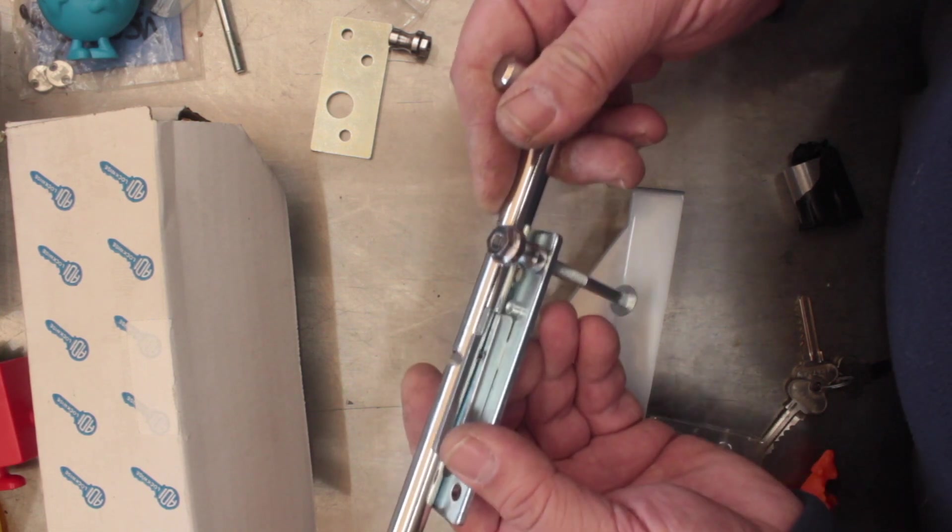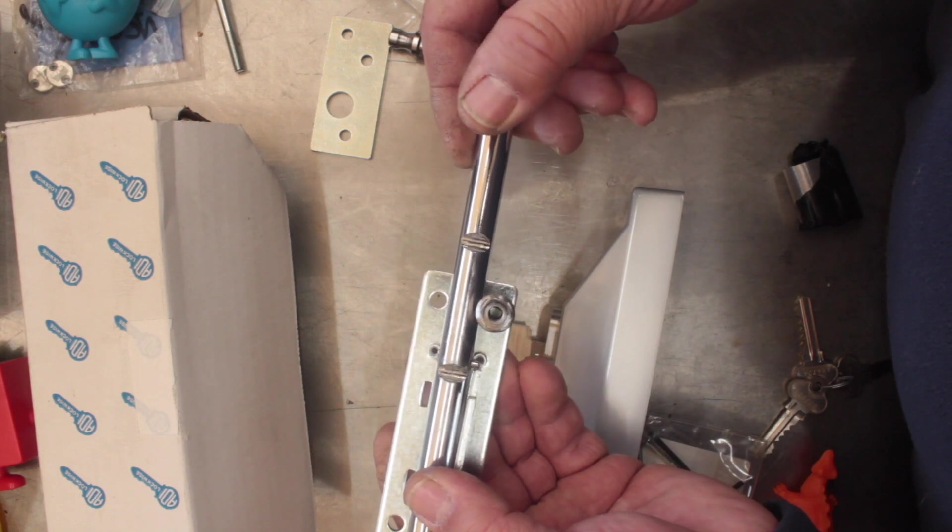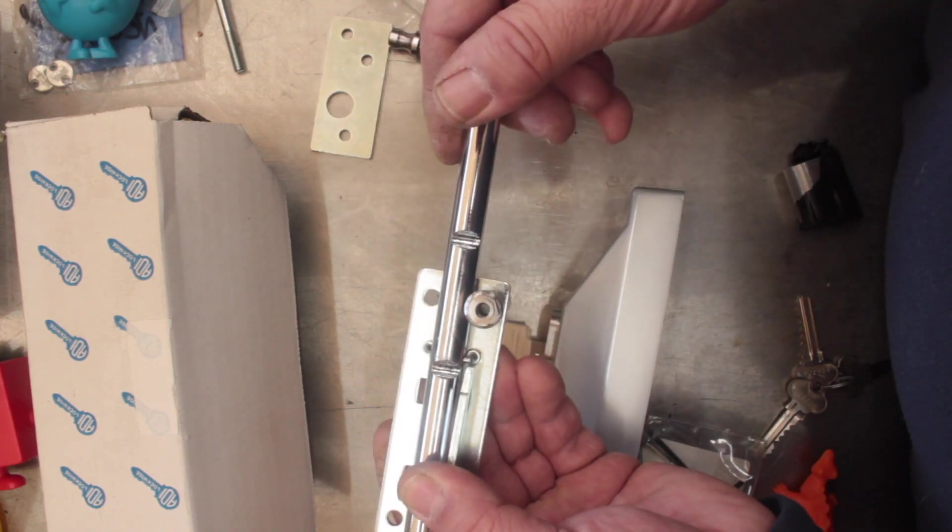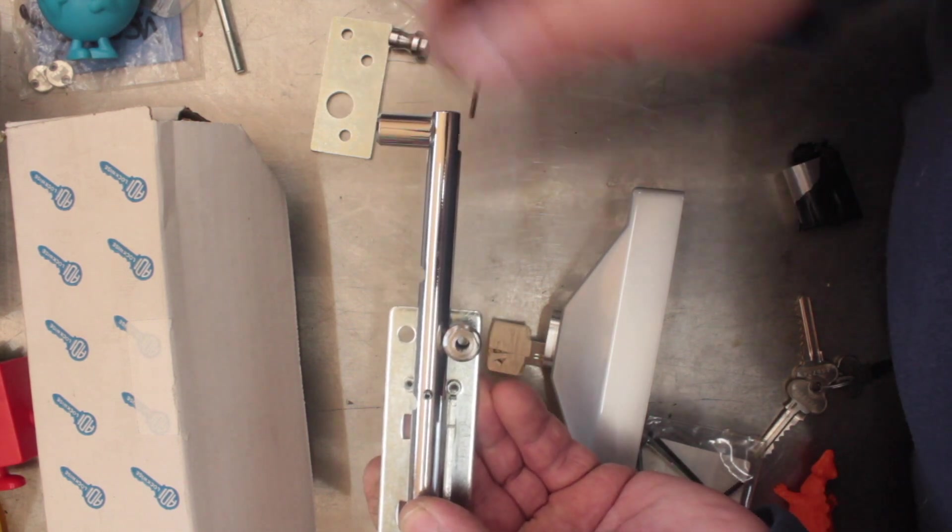And if you can see that, these runners guide that bolt. You also have this section here which captures that pin, so that pin is vital to the actual alignment of the bolt.